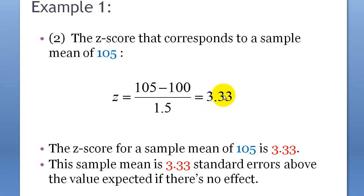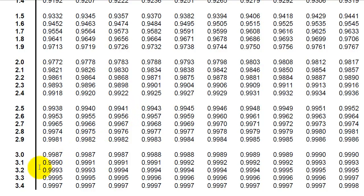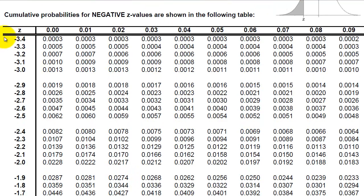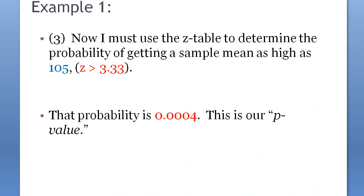The result is z = 3.33. Looking at the z-table, the probability of getting a sample mean as high as 105 or higher is only 0.0004 — an extremely low probability.